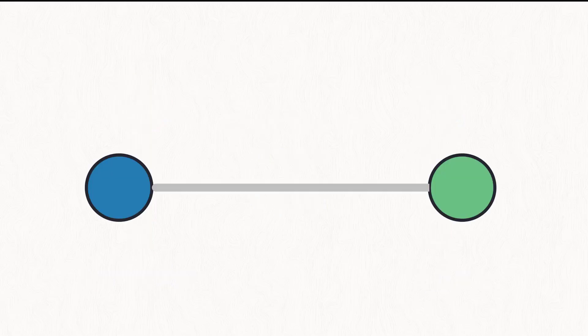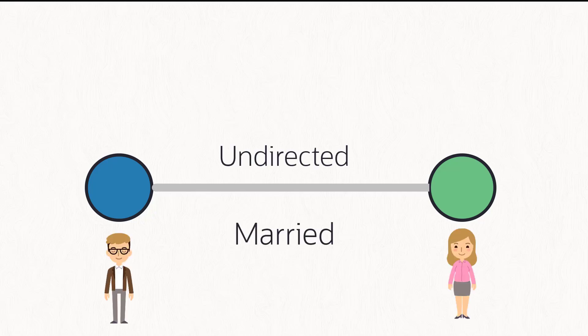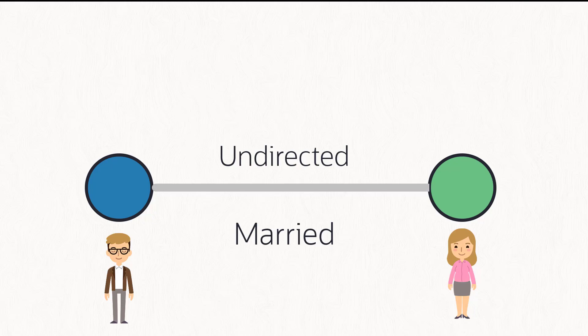Edges can also be undirected. For example, David is married to Maria. In this case, the direction is not important because we can also say that Maria is married to David.